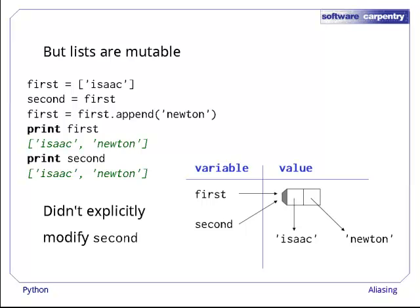We didn't explicitly modify second. There's nothing in the expression first.append newton to indicate that the value of second will change, but the change happens nonetheless. This is called a side effect, and as we said at the start of this episode, side effects can lead to some hard-to-find bugs.